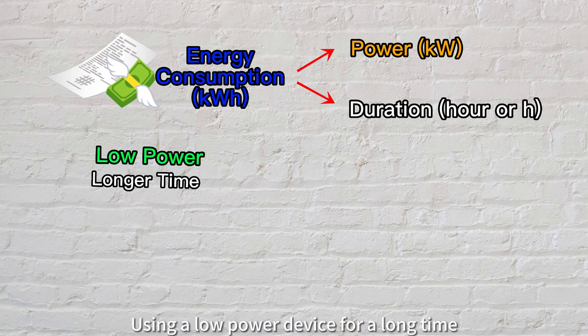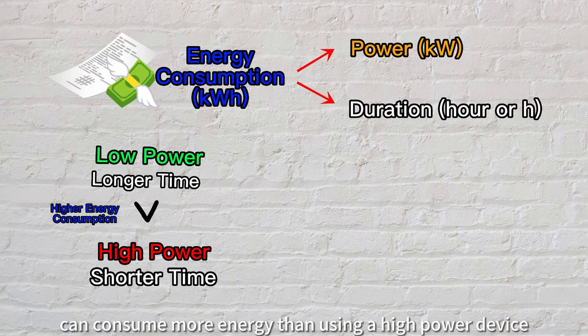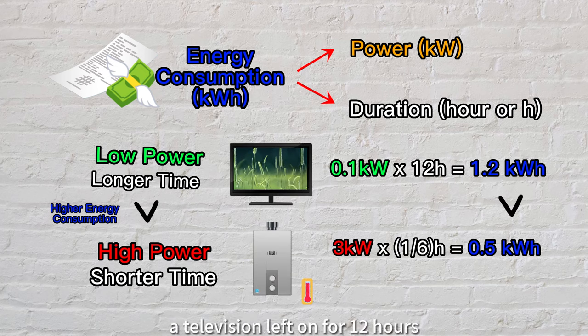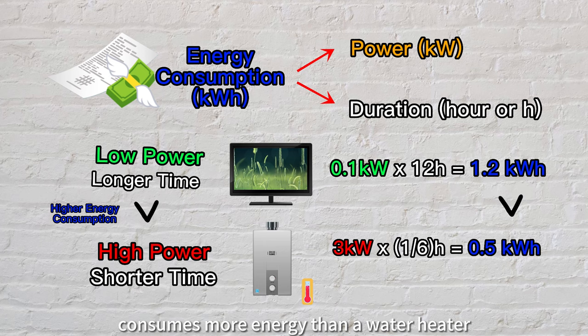Using a low power device for a long time can consume more energy than using a high power device for a shorter time. For example, a television left on for 12 hours consumes more energy than a water heater used for just 10 minutes.